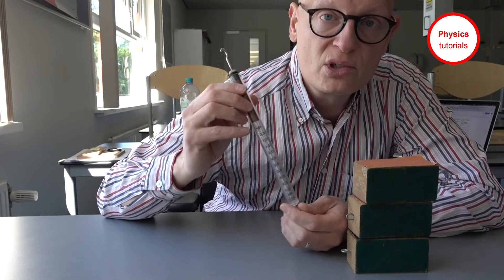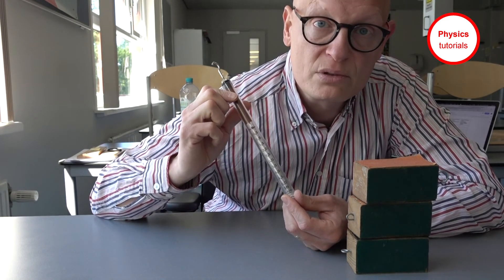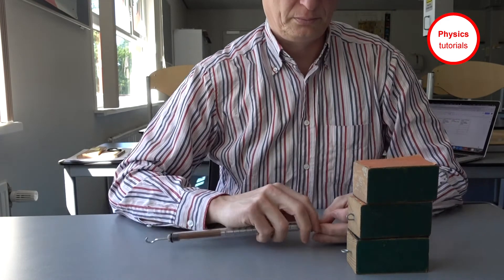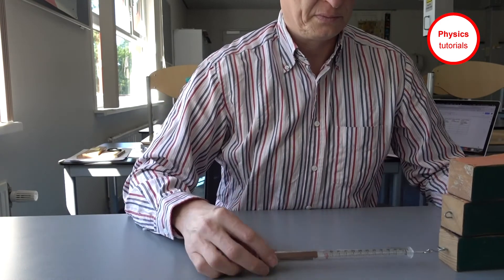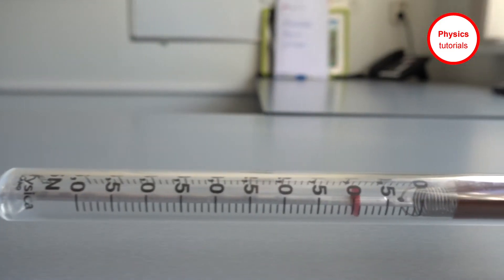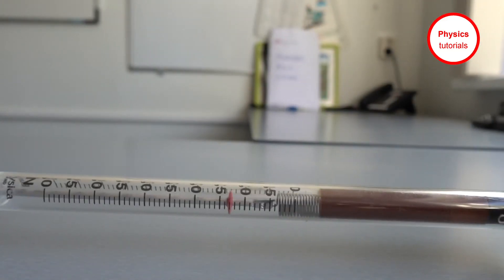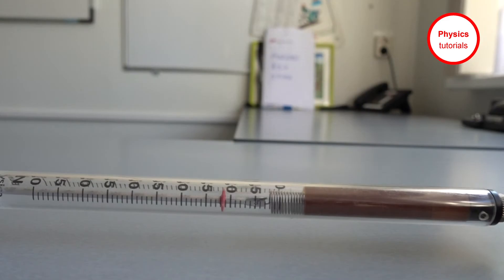To measure the friction force we're going to use a spring balance with a range up to 0.5 newtons and the first force is about 1 newton. Now we do it again and we see that the friction force is slightly higher.